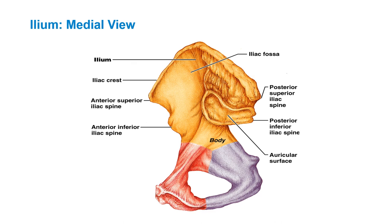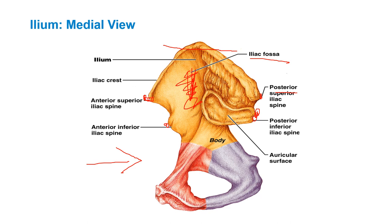Now looking at the medial view, you can see the iliac fossa again. This is the anterior view, and there's the posterior view in the back. There's the posterior superior iliac spine, posterior inferior iliac spine, anterior superior iliac spine, anterior inferior iliac spine, and the iliac crest going across the top. The auricular surface articulates with the auricular portion of the sacrum, helping to form the sacroiliac joint.